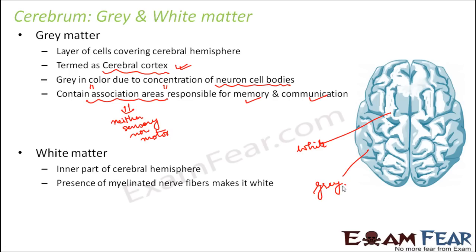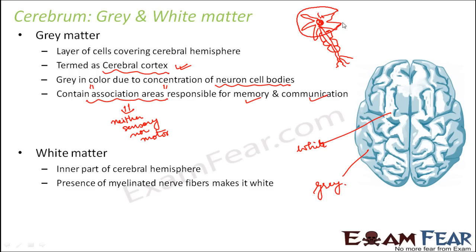The white matter is white due to the presence of myelinated nerve fibers. In the cerebrum, the cell bodies are located towards the outer side, while the myelinated axon portions are located towards the inner part. Due to the presence of these myelinated nerve fibers, the inner part appears white.